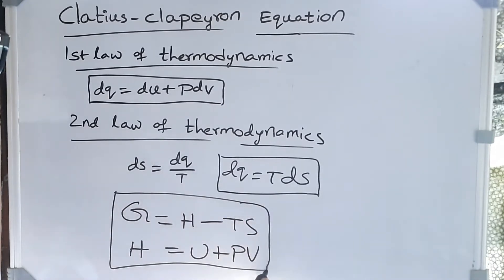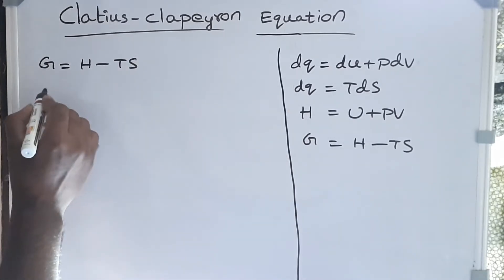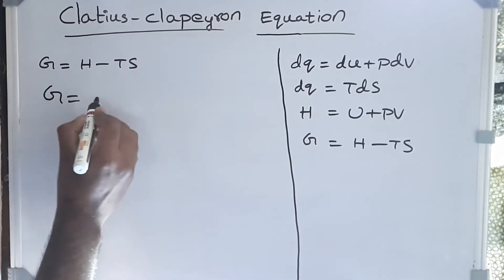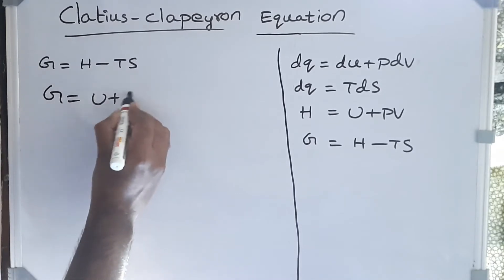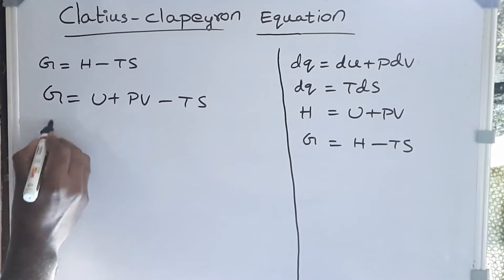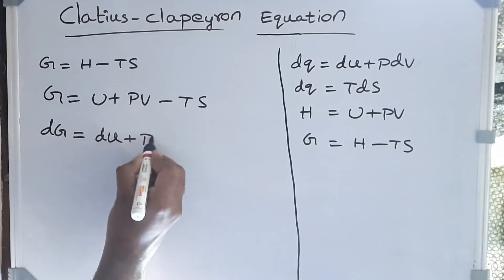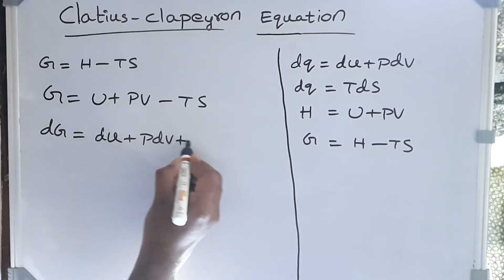We're going to use these to first derive the Maxwell equation, and from there we're going to get our Clausius-Clapeyron equation. Now let's consider our Gibbs equation and substitute enthalpy in this equation. So G becomes G = U + PV - TS. Differentiating this equation, dG = dU + PdV + VdP - TdS - SdT.